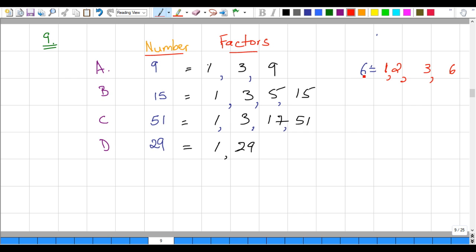The factors of six are one, two, three, and six, meaning one can go into six six times leaving no remainder. Two can go into six three times leaving no remainder, and six can go into six one time leaving no remainder.